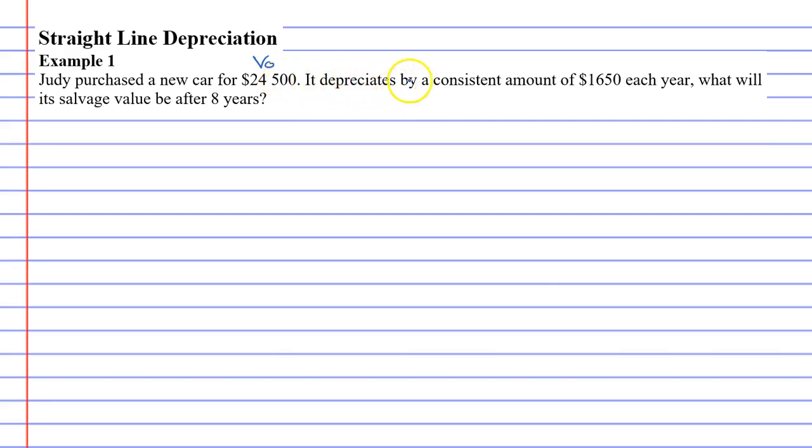It depreciates by a consistent amount of $1,650 each year. And that's capital D. That's what it's depreciating by each year.